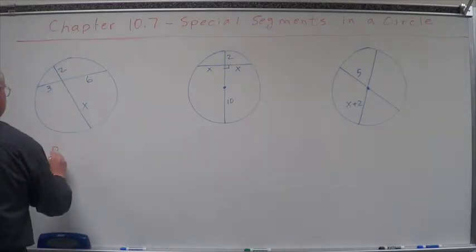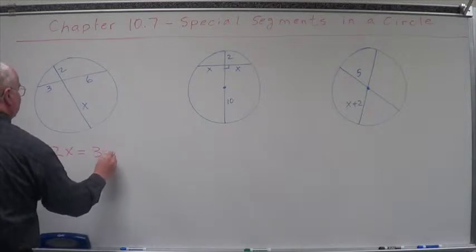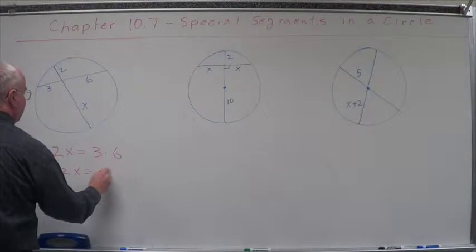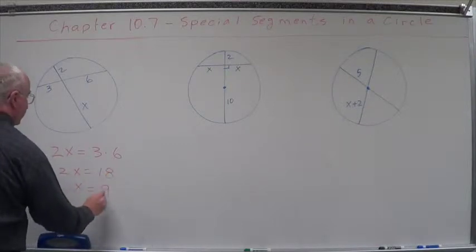So 2 times x, that's 2x, equals 3 times 6. 2x equals 18, x equals 9.